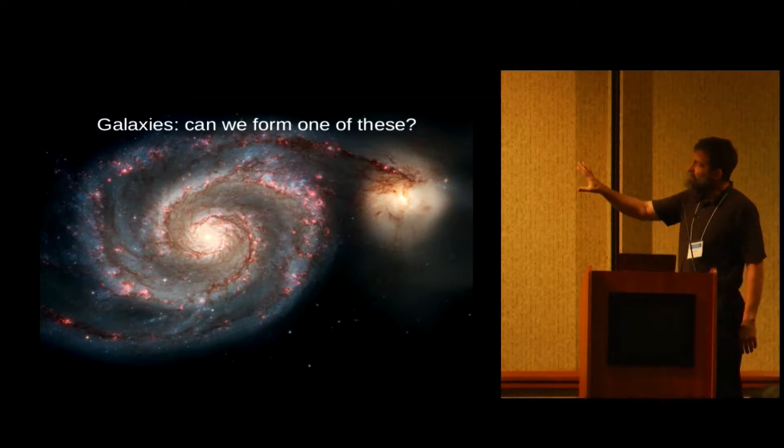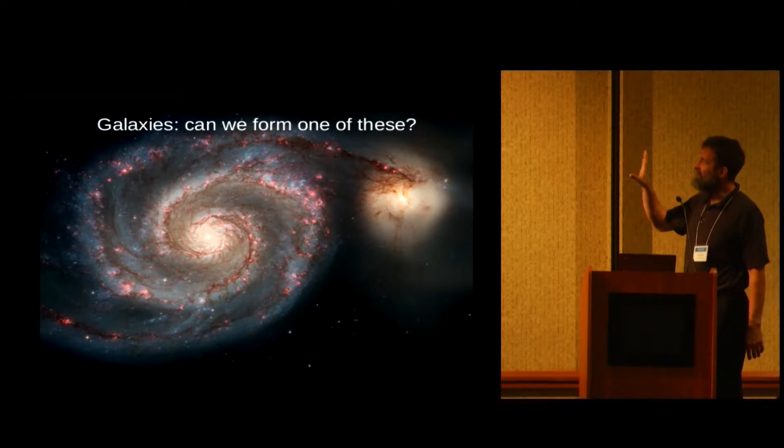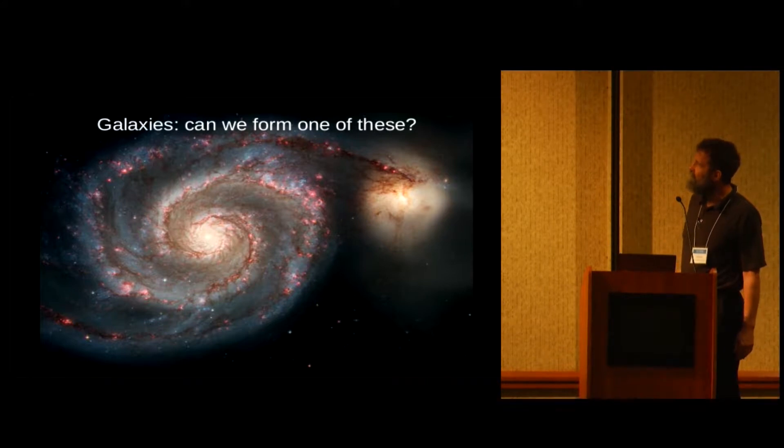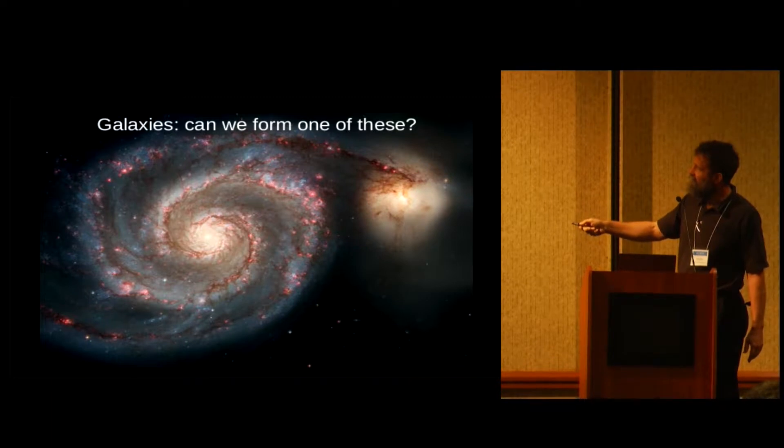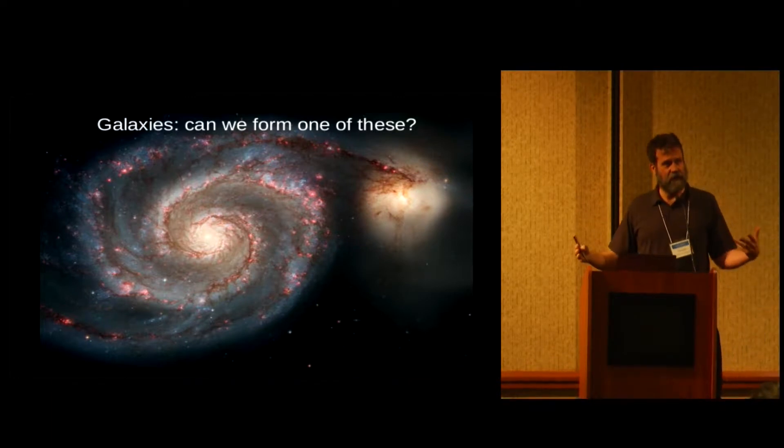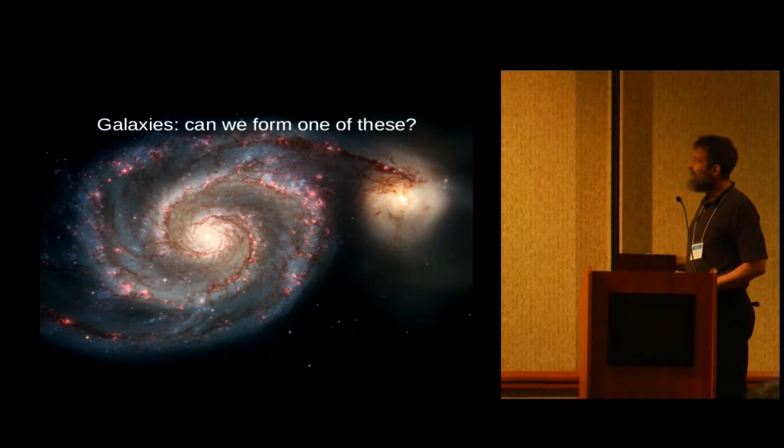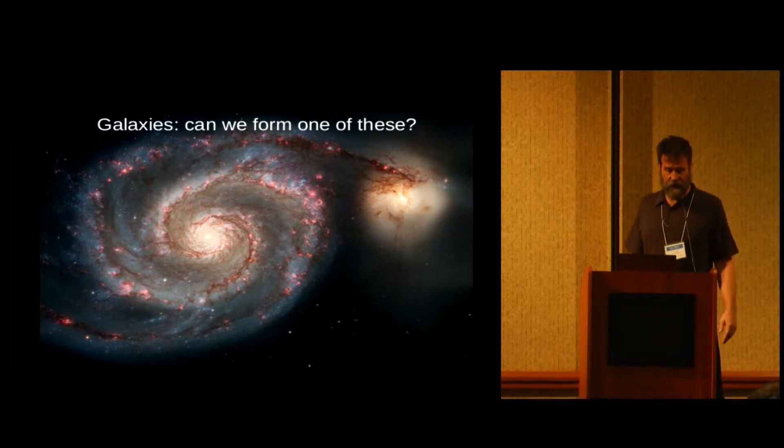But what you see here is not the dark matter. You see stars, and pretty much every aspect of this image: there's starlight here, the red dots are photoionization regions and the photons come from stars. You can see obscuration from dust here; the dust is made in stars. So understanding how the stars form and evolve is fundamental to understanding how a galaxy works.